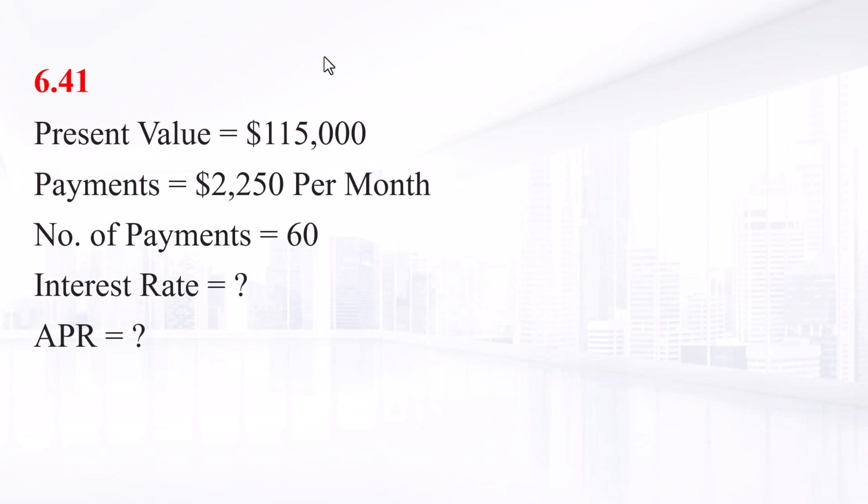You want to borrow $115,000 from your bank to buy a new sailboard. You can afford to make monthly payments of $2,250 but no more. Assuming monthly compounding, what is the highest rate you can afford on a 60-month APR loan?